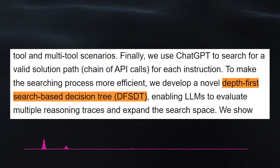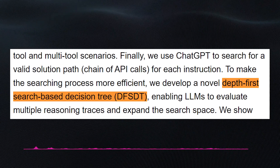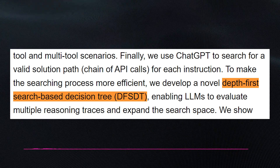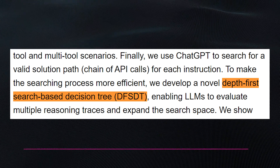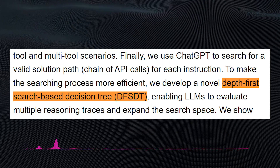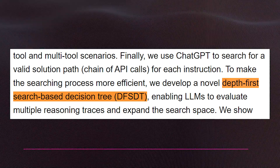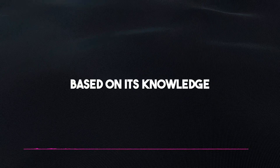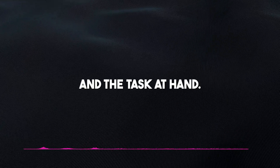For ToolLLM, when given a new task that requires it to use an API, it uses depth-first search tree reasoning to explore different possible ways to achieve the task. ToolLLM selects the best way to use the API based on its knowledge of the API and the task at hand, making it a lot more efficient than older LLMs.